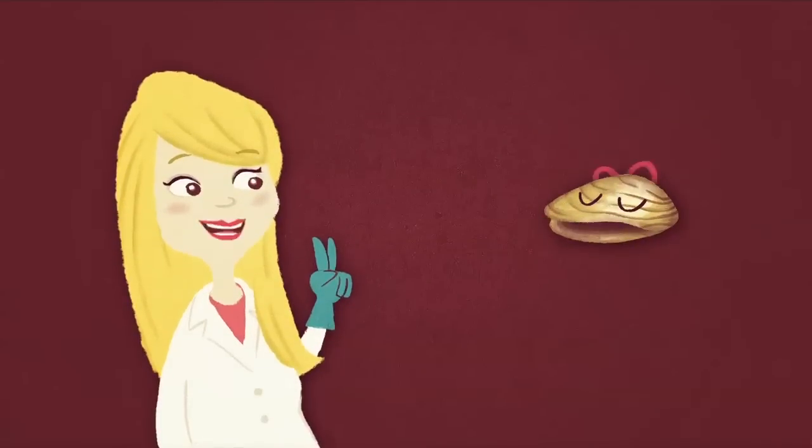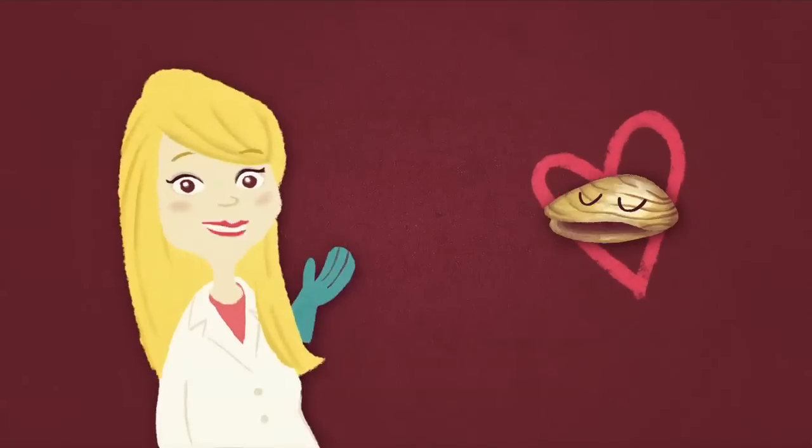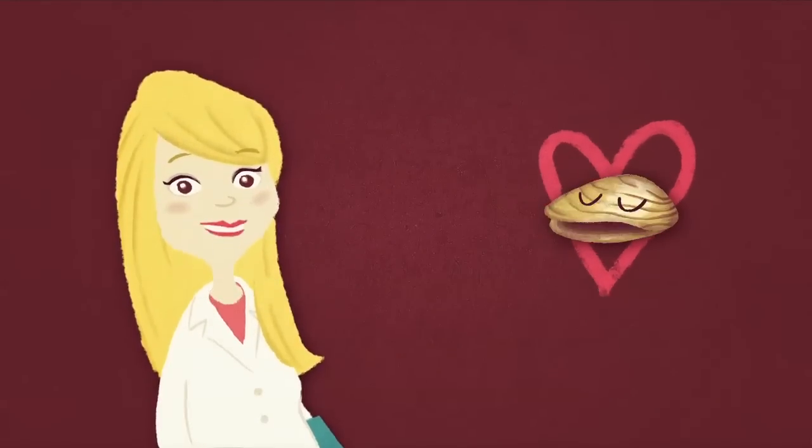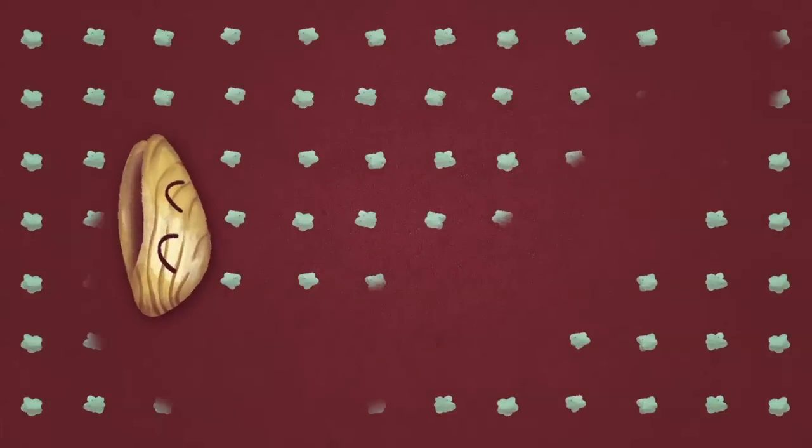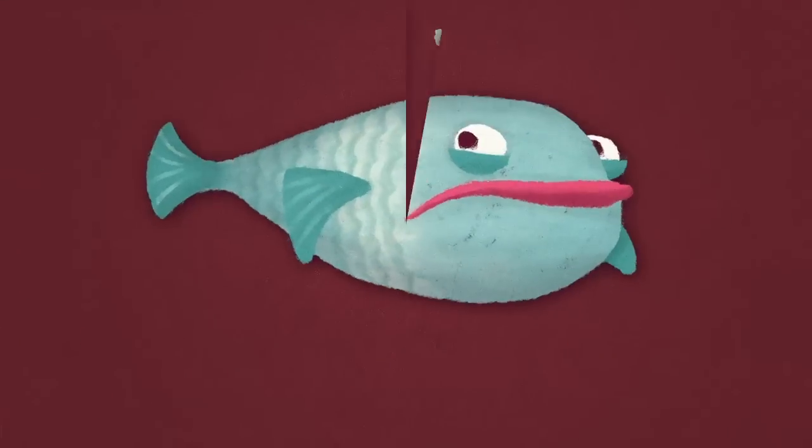Eat, sleep and mate. Not necessarily in that order. They mate much more than they sleep and they eat even more. They eat so much, filtering the water, that make the algae disappear.